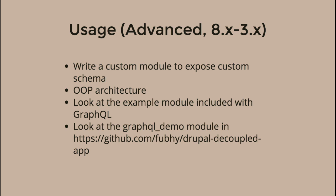My advice for the 3X branch of the GraphQL module: there is an example module. If you also enable that, you will get a lot more data out of your Drupal database by default — but you wouldn't want to use that example module in production. You would just use it as an example for writing your own module. There's also a module in the Drupal decoupled app — called graphql_demo — which Michael will demo a little bit later. It has a lot more code to give you an example of how you should write your own stuff. In the 3X branch you get this kind of base schema, and in your custom module you can extend the schema with anything you want.